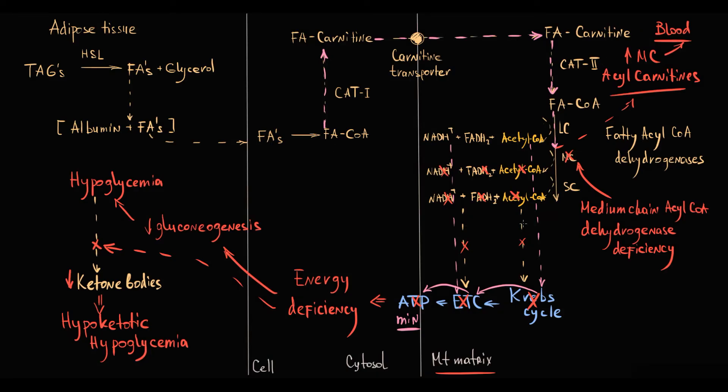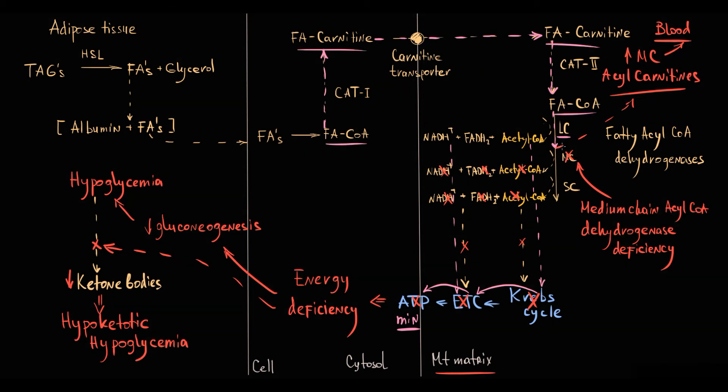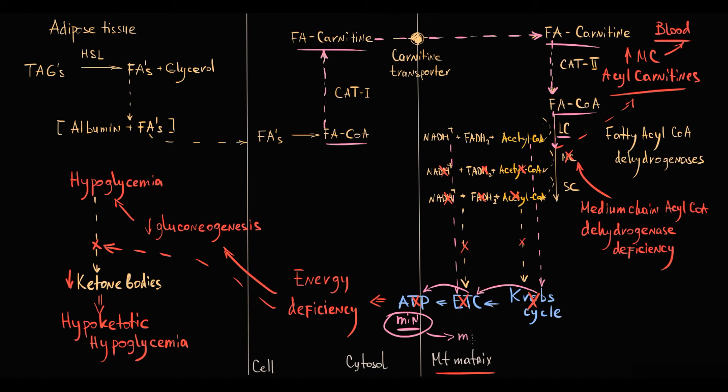But as we see, carnitine shuttle with long-chain acyl-CoA dehydrogenases are working properly. Thereby, fatty acids are transported to mitochondrial matrix and some energy at least produced. And in case of child has proper diet, this disorder can be even asymptomatic, so medium-chain acyl-CoA dehydrogenase deficiency has milder presentation.